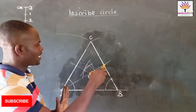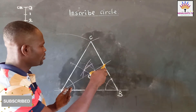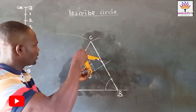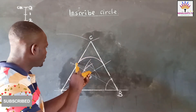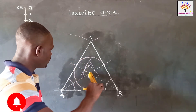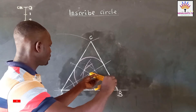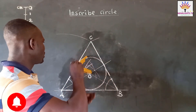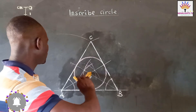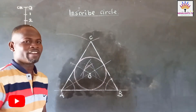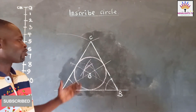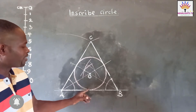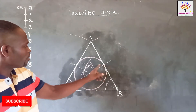So we are now going to draw the circle to touch the three sides of the triangle. This is very perfect, and this is what we call the inscribed circle. As you can see, the circle has touched the three sides of the triangle.